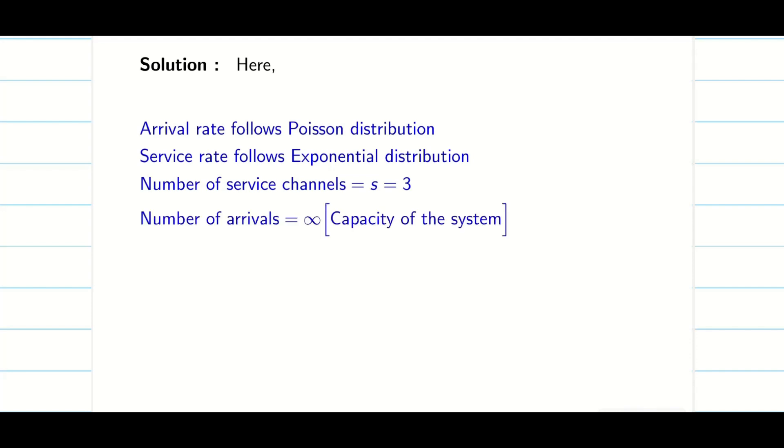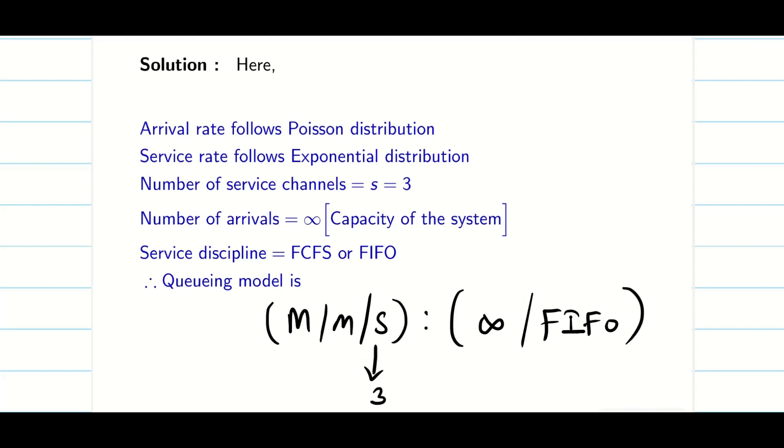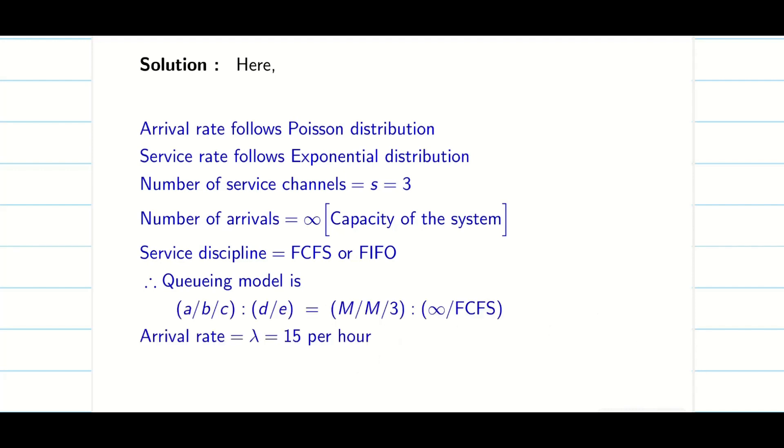So I will directly go into the problem. In all our problems, arrival rate is Poisson, service rate is exponential. Here number of typists are three, so service channels is three. They never speak about the number of arrivals of letters, so the capacity is infinite, and first-in-first-out. So the queuing model is going to be M/M/s/infinity/FIFO. Here my s value is three typists. Lambda is directly given 15 per hour, mu is directly given service rate 6 per hour.